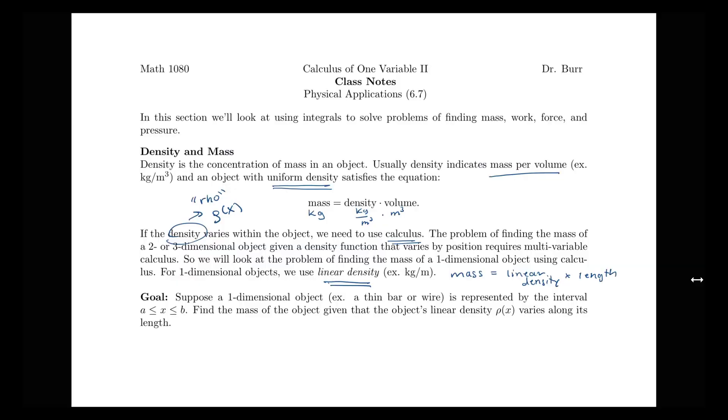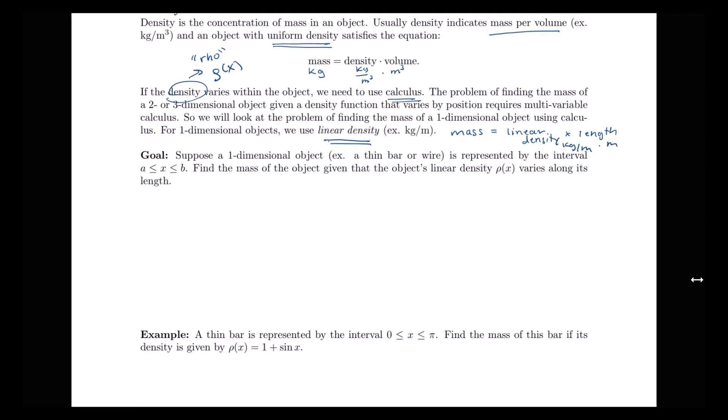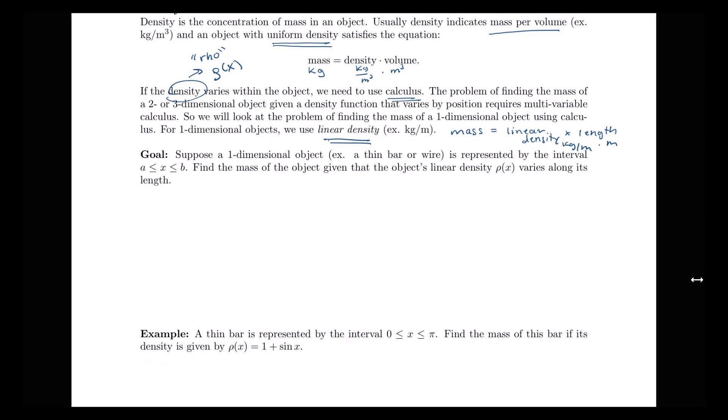So let's think through what our formula is going to look like in the case of a variable linear density. Suppose we have a one-dimensional object, so we're thinking of some sort of thin bar or wire, that's going to be represented by an interval from a to b. We're interested in finding the mass of that object given that the object's linear density ρ(x) varies along the object's length.